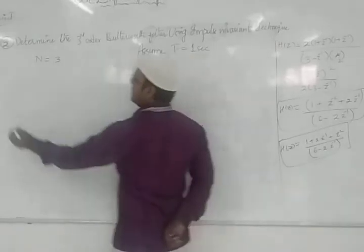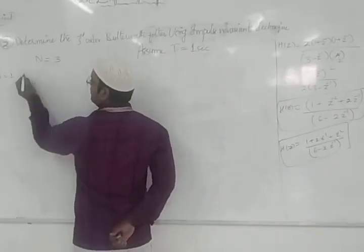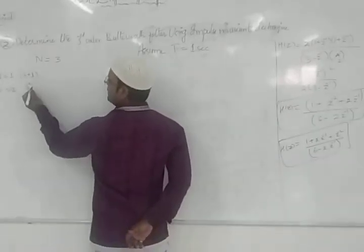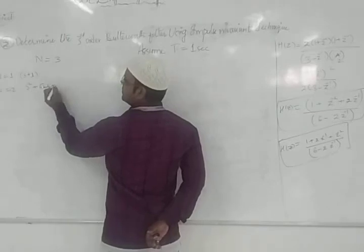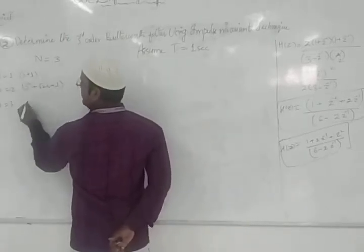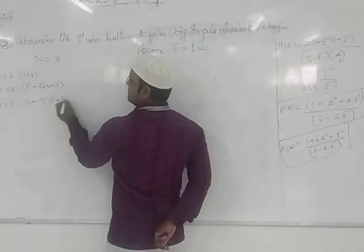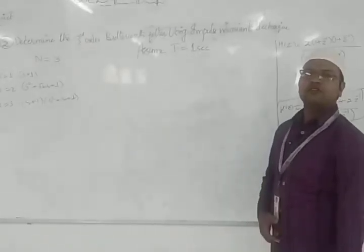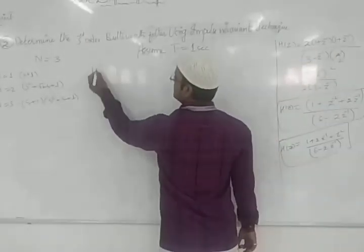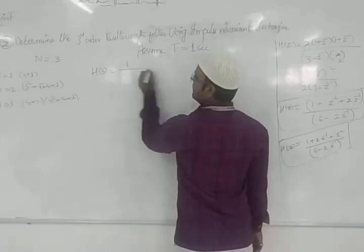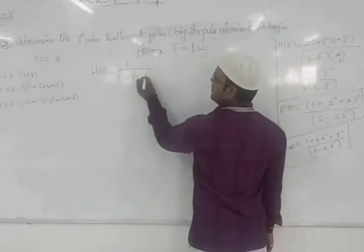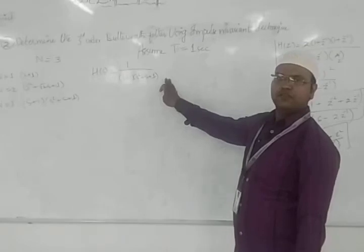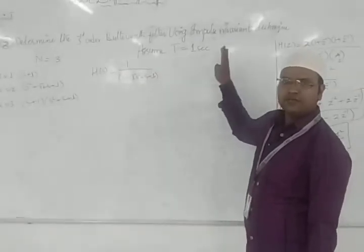For a Butterworth filter: when n=1, the denominator polynomial is (s+1); when n=2, it is s²+√2·s+1; when n=3, it is (s+1)(s²+s+1). So H(s) for the third-order Butterworth filter is H(s) = 1 / [(s+1)(s²+s+1)]. This is the transfer function we will work with.